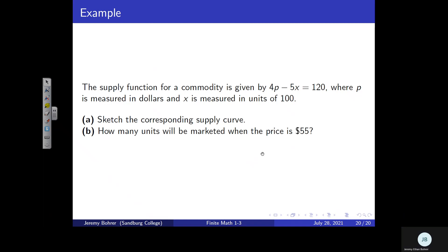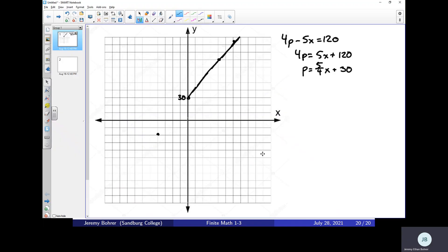So P is the price. So we know the price is $55, and that's 5 fourths X plus 30. Well, I can subtract 30 from both sides. That gives me 25 equals 5 fourths X. And then I can multiply both sides by 4 fifths.